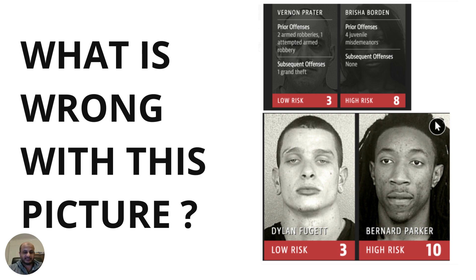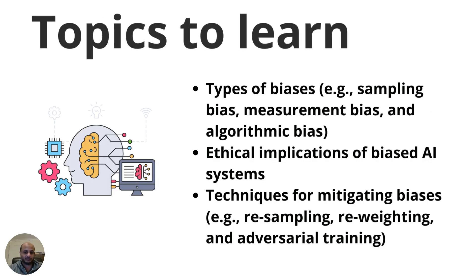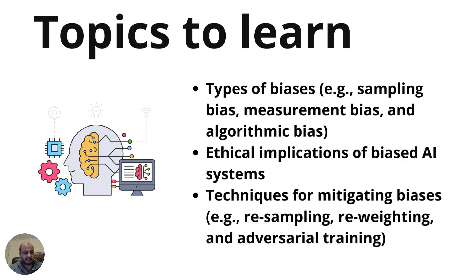Look at what the person on the left has done versus the person on the right, who has a high risk score of 10 but hasn't committed serious crimes. The AI system was biased against African American people and in favor of white people. These scores were being used to put people in jail and issue fines — that shows how dangerous this can be. You need to learn the types of biases: sampling bias, measurement bias, and algorithmic bias; understand their ethical implications; and know how to mitigate them through resampling, reweighting, and adversarial training.